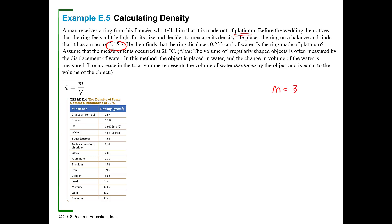of 3.15 grams—I'm going to write that down because that sounds like something I can use. He then finds that the ring displaces 0.233 cubic centimeters of water—that's a volume. The volume it's displacing is 0.233 cubic centimeters. Is the ring made of platinum? What it's asking me basically is what's the density of this ring and is the density the same as what I see on this table, which is 21.4 grams per cubic centimeter.